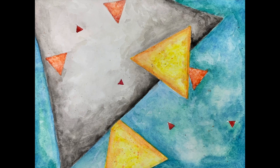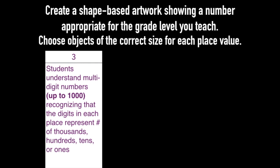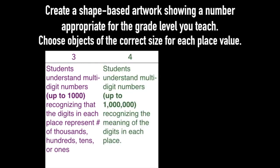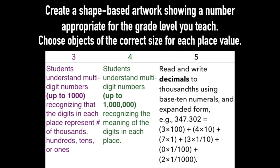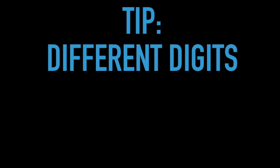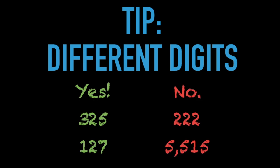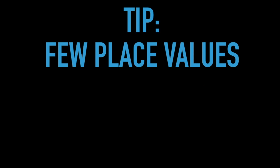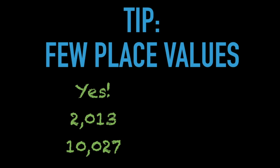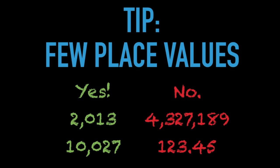Here are the Common Core State Standards in math for grades three, four, and five. Your teacher may have different requirements for your project. One tip is to choose a number with different digits, like these — having several of the same digit repeated can be confusing. Also, represent only a few place values. These two, for example, only have three places that aren't zeros. Numbers with seven and five places are very difficult to create visually.